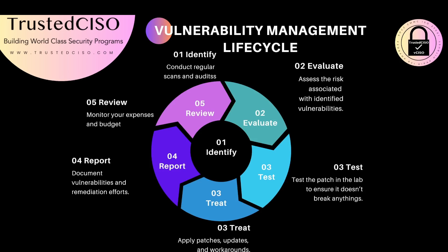The vulnerability management lifecycle includes six steps. Number one, Identify: conduct regular scans and audits to discover vulnerabilities. Number two, Evaluate: assess the risk associated with identified vulnerabilities. Number three, Test: patch in a test environment before deploying, because sometimes patches can break software. Number four, Treat: apply patches, updates, and workarounds to mitigate vulnerabilities. Number five, Report: document vulnerabilities and the remediation effort. Number six, Review continuously: monitor and improve the vulnerability management process.